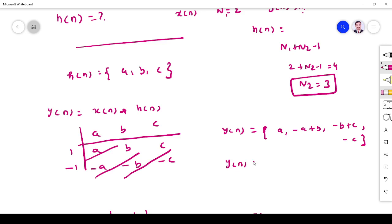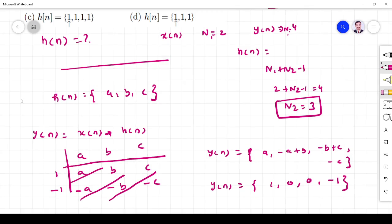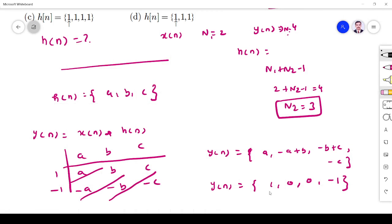The given y[n] is {1, 0, 0, -1}. We can say A equals 1, -A plus B equals 0 so B equals 1, and C equals 1.